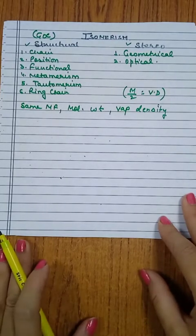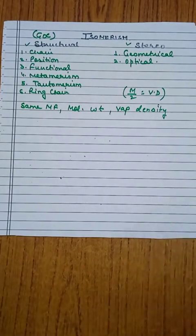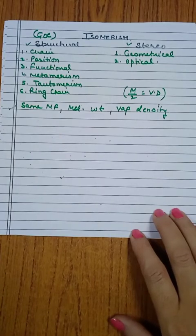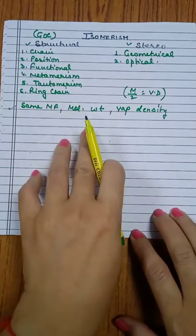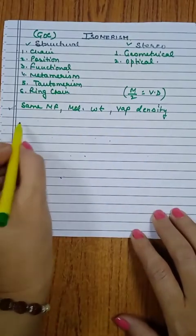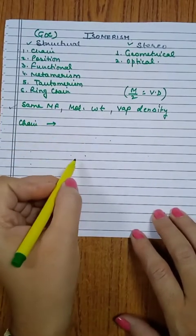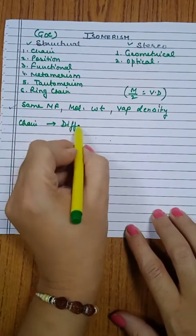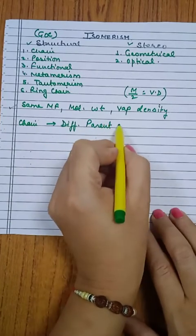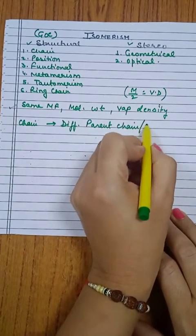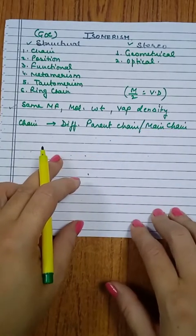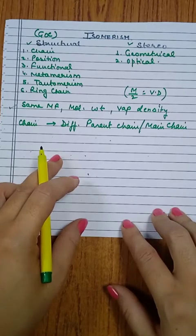When we talk about chain isomers, since they are isomers they share the same molecular formula, molecular weight, and vapor density — I don't need to repeat that. What matters is how they differ. Chain isomers differ in their parent chain: they have a different number of carbon atoms in the main (parent) chain. Those isomers with different parent chain lengths are called chain isomers.